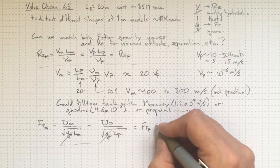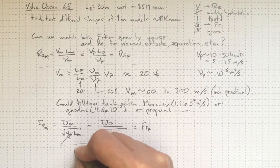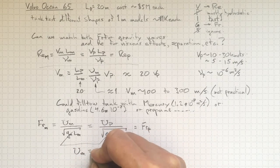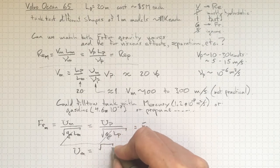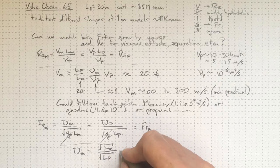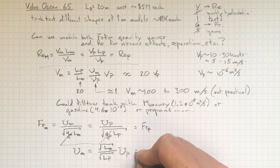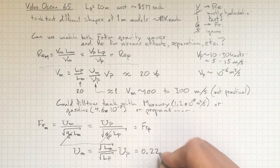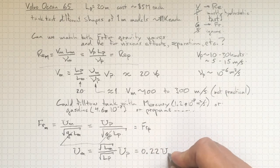Fortunately, this is actually going to turn out well for us because if we rearrange this we'll find that the velocity for the model must be equal to the square root of the length of the model over the square root of the length of the prototype times the velocity for the prototype. That'll be equal to 0.22 times the velocity for the prototype. And that is actually practical.